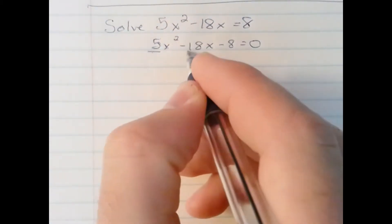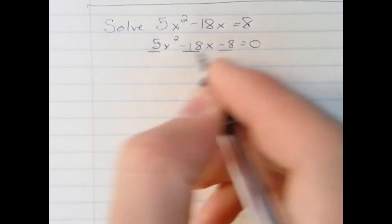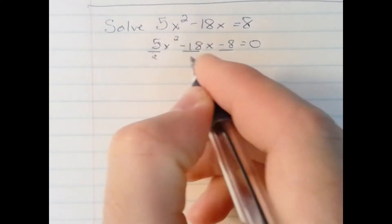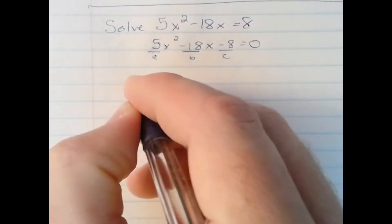Notice our coefficients: the a term, the b term, and the c term. a, b, and c. We use this with the quadratic formula.